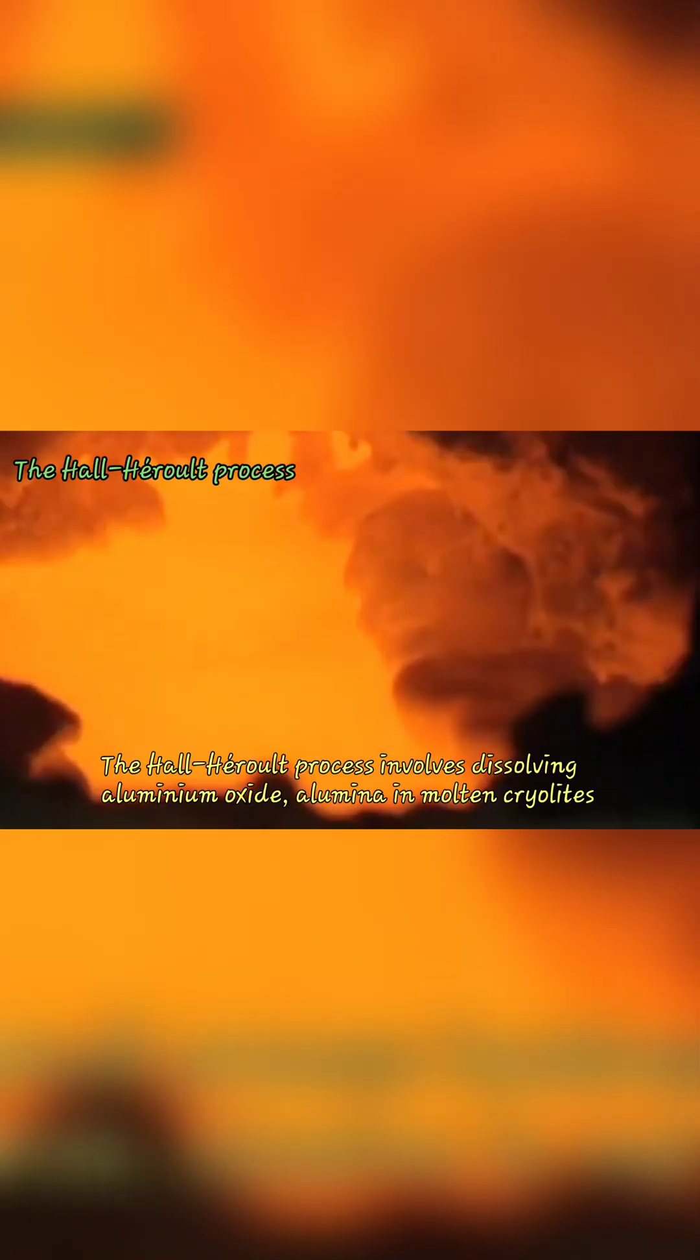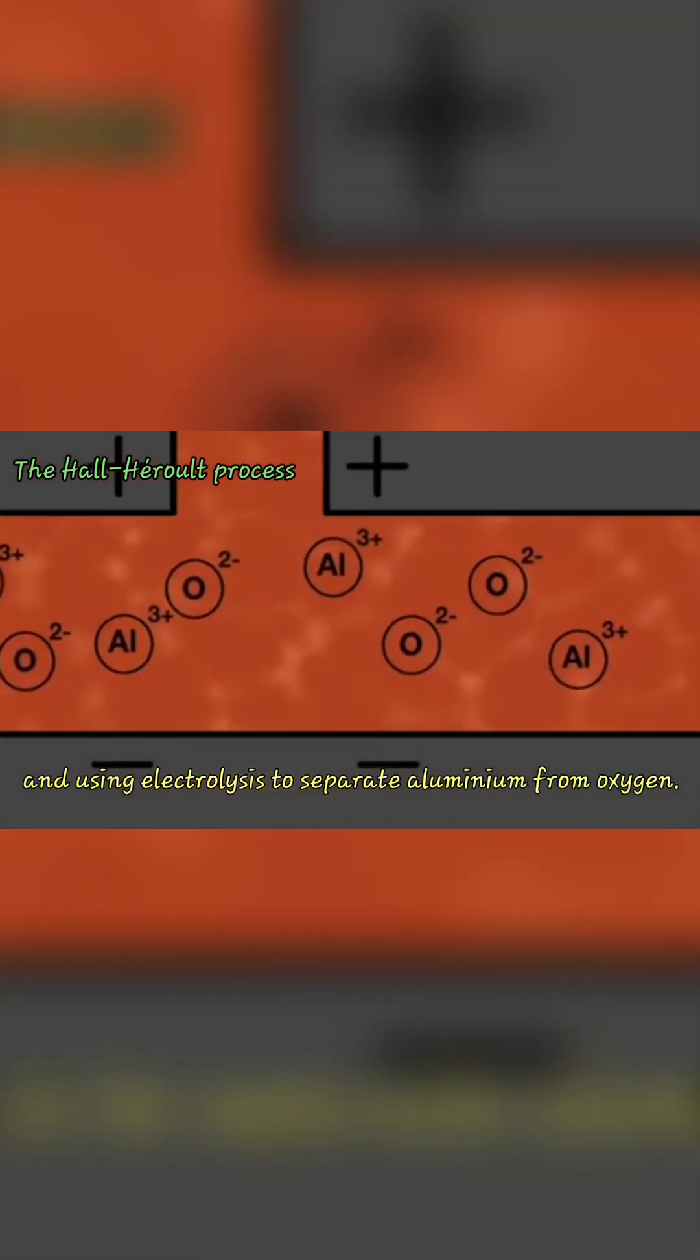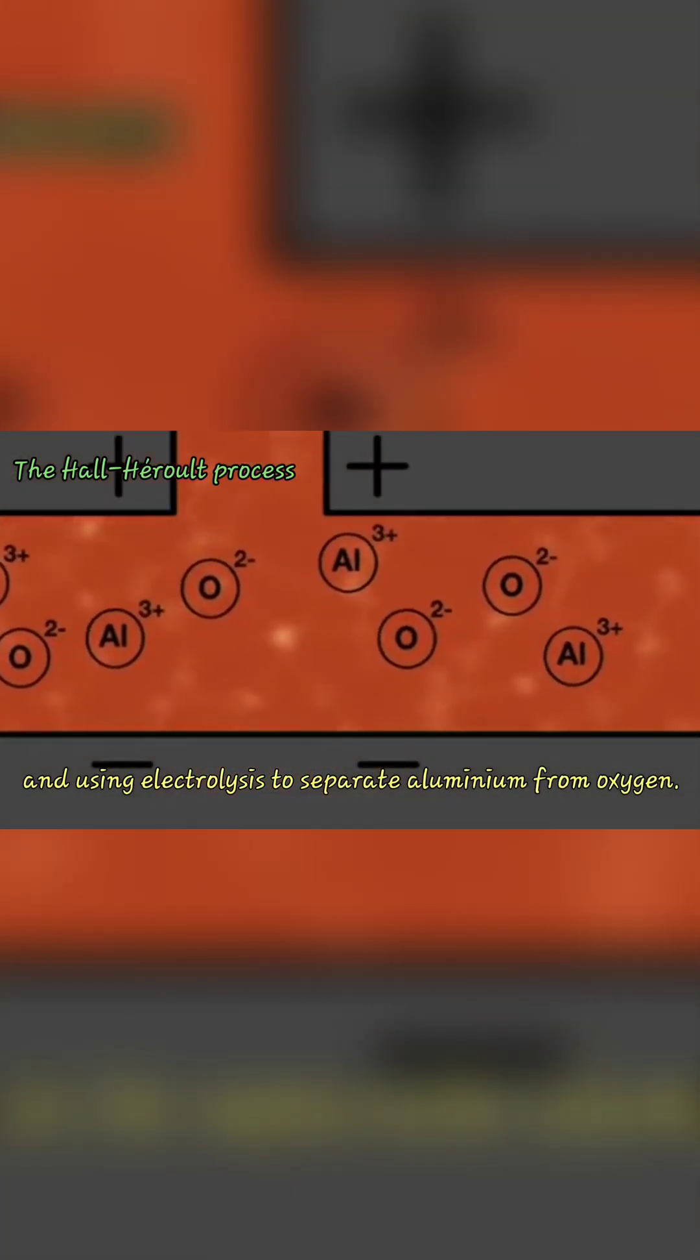The Hall-Heroult process involves dissolving aluminium oxide, alumina, in molten cryolite and using electrolysis to separate aluminium from oxygen.